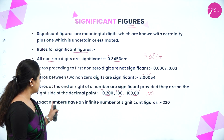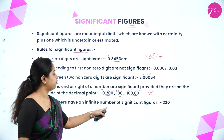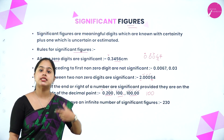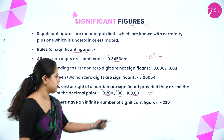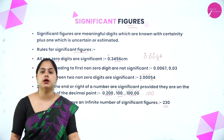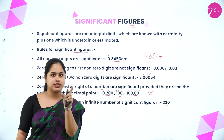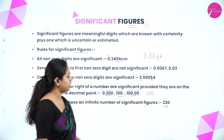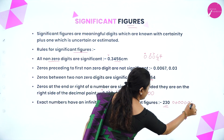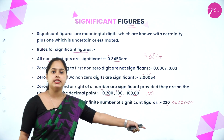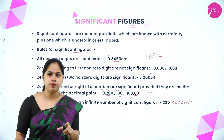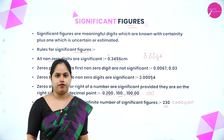Rule 5: Exact numbers have an infinite number of significant figures. For example, if I say I have 230 balloons, that is an exact number. There can be an infinite number of zeros I could write, and all would be significant. So for exact numbers, there are an infinite number of significant figures.